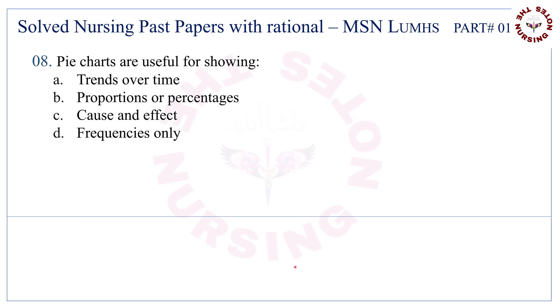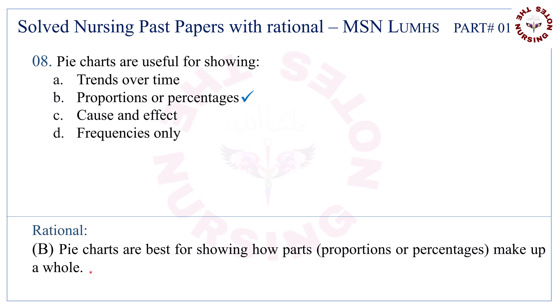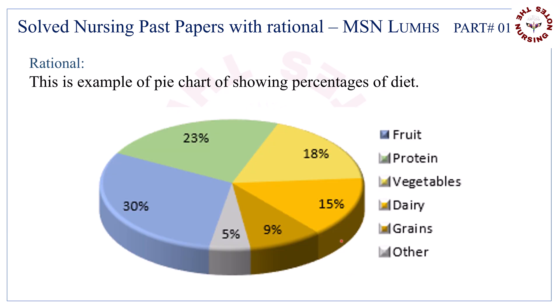Question number eight: pie charts are useful for showing. Correct answer is B, proportions or percentages. This is an example of a pie chart showing percentages of diet.